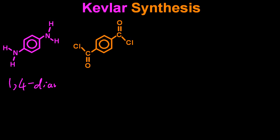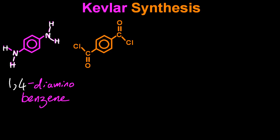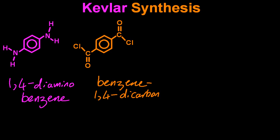These are the two molecules that react together to make Kevlar. The first is 1,4-diamino benzene. On the first and the fourth carbon there is an NH2 group, which gives you the 'diamino.' Benzene is six carbons in a hexagon with single and double bonds. The second reactant is benzene-1,4-dicarbonyl chloride. A carbonyl is a carbon double-bonded to an oxygen, and if you stick a chlorine onto that carbon, it becomes carbonyl chloride.